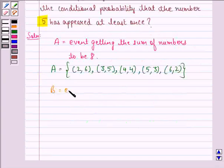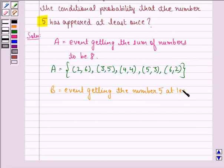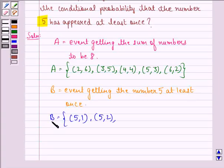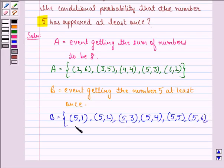Let B be the event of getting the number 5 at least once. So, the sample space for B will be 5, 1, 5, 2, 5, 3, 5, 4, 5, 5, and then 6, 5.